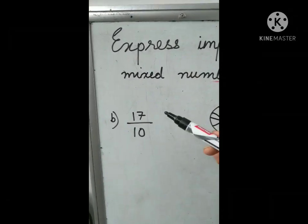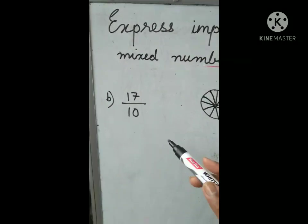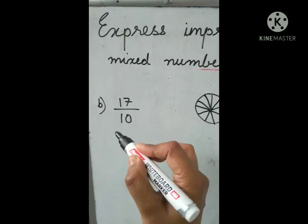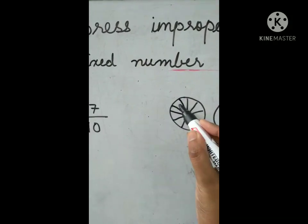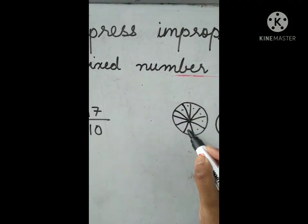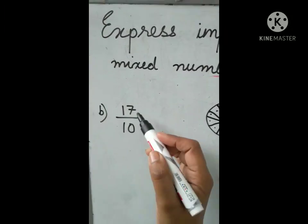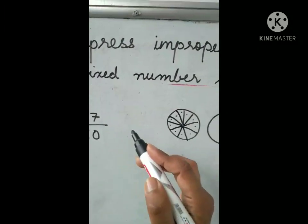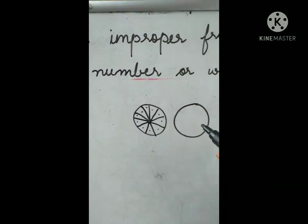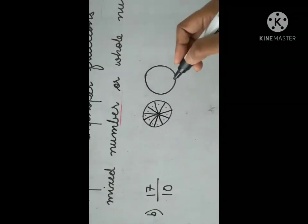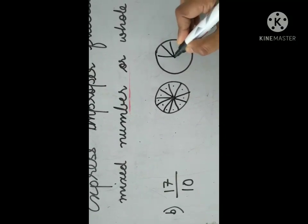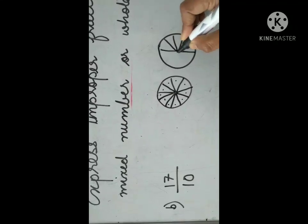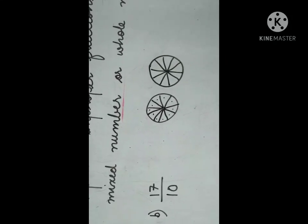Look at the second question: 17 over 10. Represent this in the form of a figure. What is the denominator here? 10. So divide the figure into 10 equal parts: 1, 2, 3, 4, 5, 6, 7, 8, 9, 10. We need 17 parts to be shaded, so you have to draw one more figure and divide it again into 10 equal parts: 1 through 10. Each figure is divided into 10 equal parts.